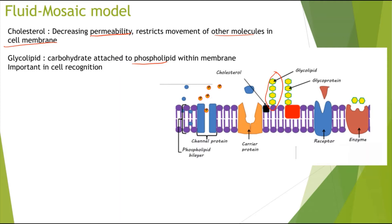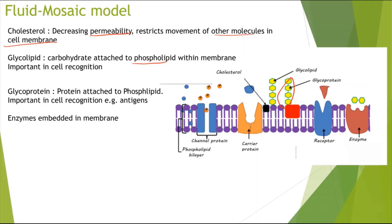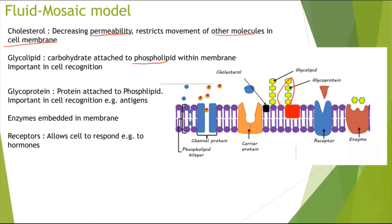Glycolipids are important in cell recognition. A glycoprotein is basically a protein attached to a phospholipid, and it is also important in cell recognition — these can act as antigens, for example. Next we have enzymes, which are embedded in membranes so they are not mobile; they only stay in that membrane. We can also have receptors, which allow the cell to respond to different stimuli — for example, a hormone such as insulin might bind with a receptor to allow cells to react.